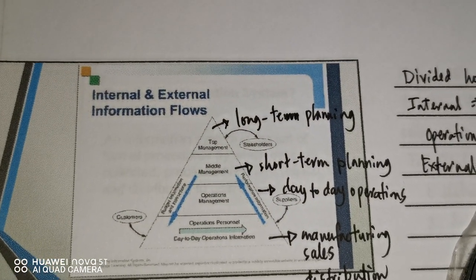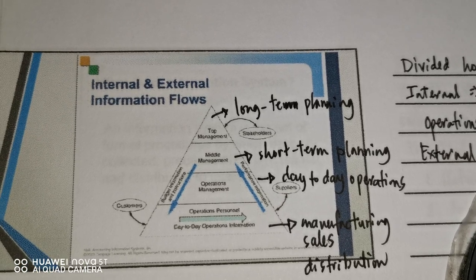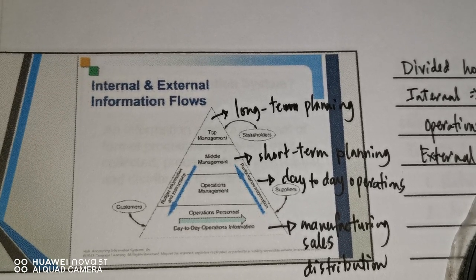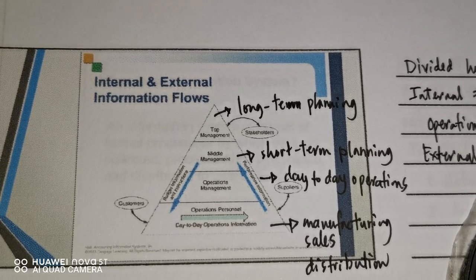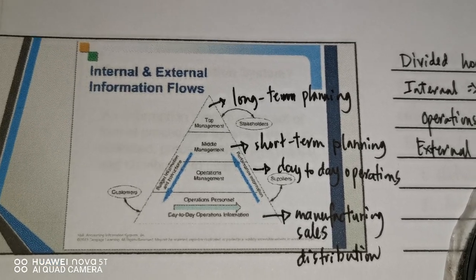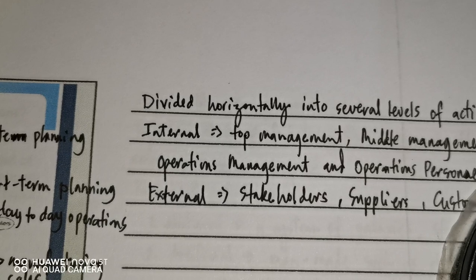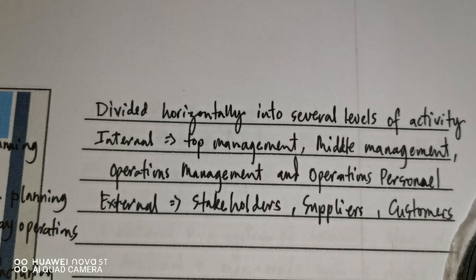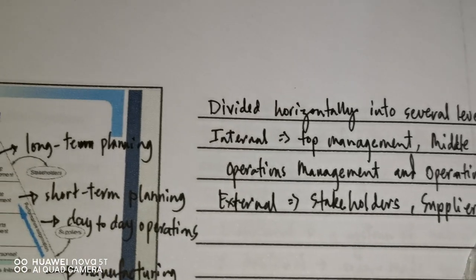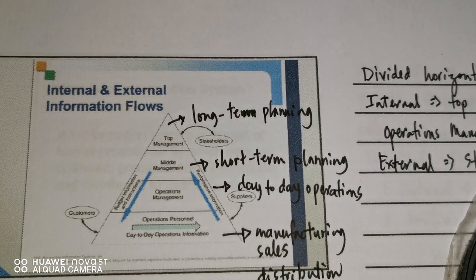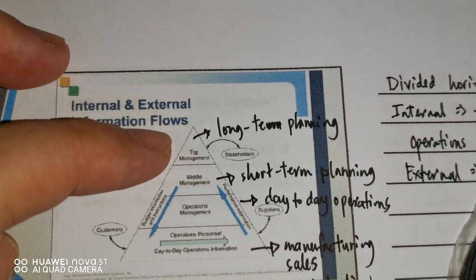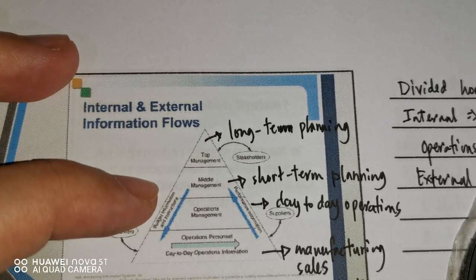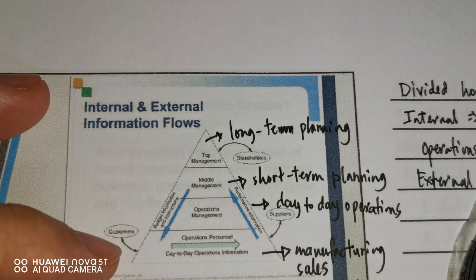Let us now discuss the internal and external information flows. You can see a pyramid which represents the information flow within a business organization. It is divided horizontally into several levels of activity. The internal information flows correspond to these horizontal divisions: top management, middle management, operations management, and operations personnel.